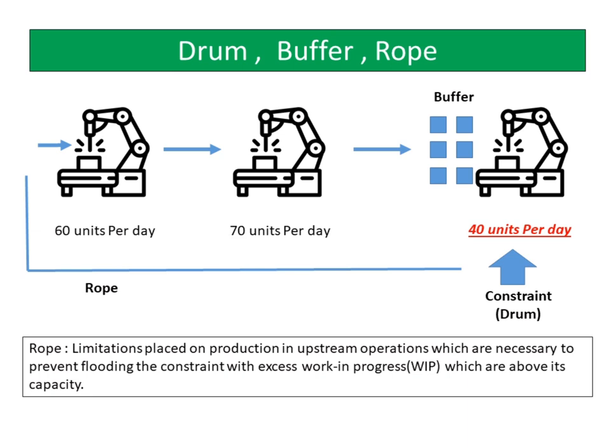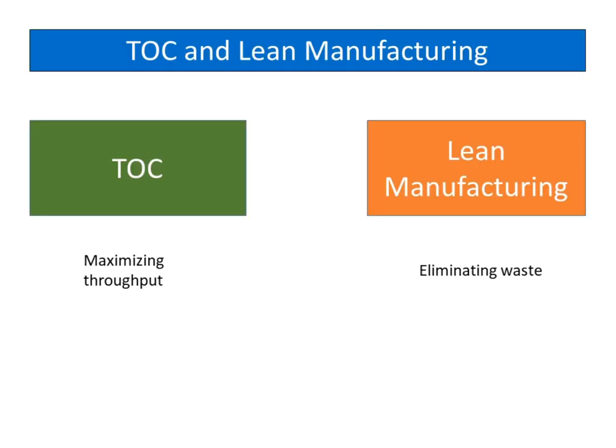In general terms, lean manufacturing focuses on eliminating waste, whereas the theory of constraints emphasizes maximizing throughput. Nonetheless, the two approaches can be used together.